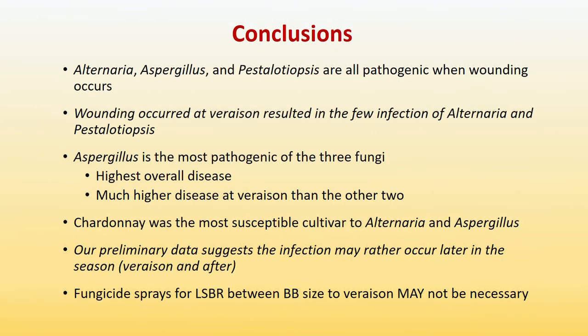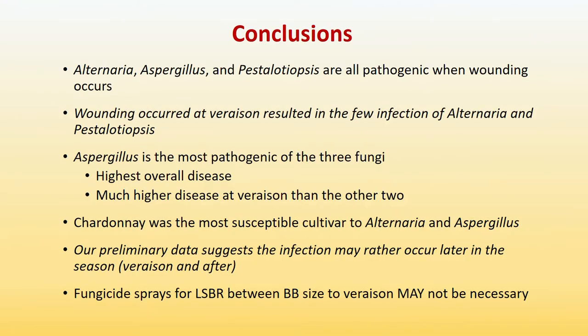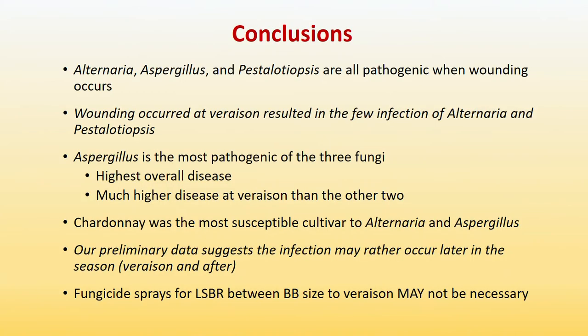In conclusion, those three fungi seem to be all pathogenic when wounding occurs. Wounding at veraison resulted in few infections by Alternaria and Pestalotiopsis. Aspergillus seems to be the most pathogenic of all three fungi. Chardonnay was the most susceptible cultivar to Alternaria and Aspergillus. Our preliminary data suggests infection may rather occur later in the season for ripe rot. However, we only did this for one year, so we're going to repeat it this year to get more consistent data.